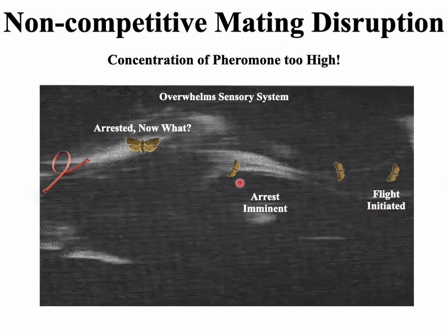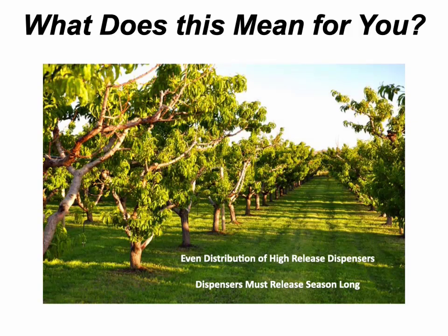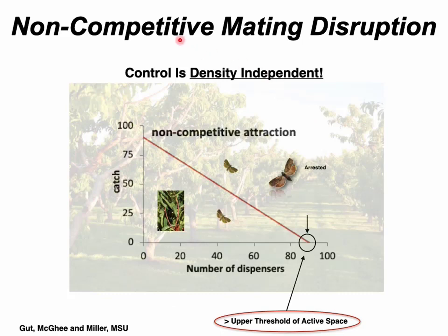To summarize non-competitive mating disruption: flight is initiated, males fly upwind, but the concentration from the pheromone dispenser gets too high, overwhelms their sensory system, and they get arrested — they stop flying. For OFM growers in stone fruit orchards, what you want is a uniform, even distribution of high-release dispensers that last season-long, creating a concentration of pheromone high enough everywhere in the orchard to disrupt OFM males non-competitively.